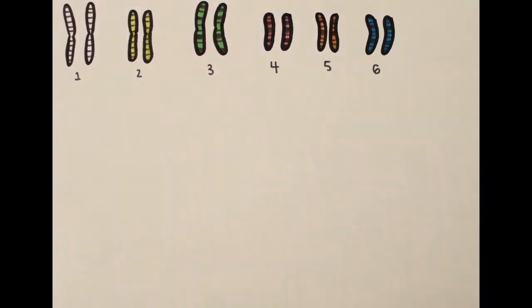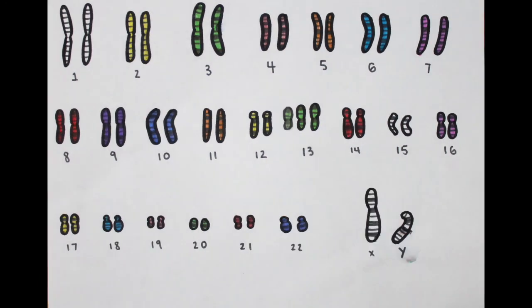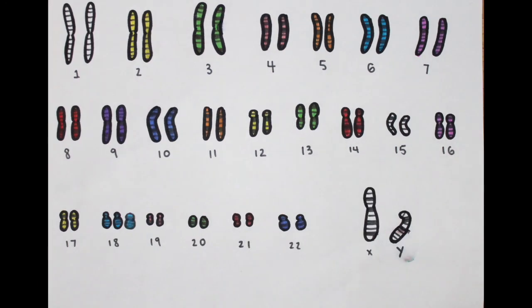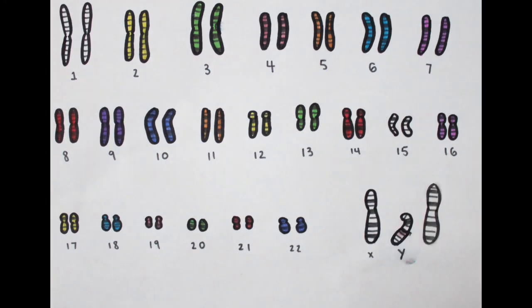Amniocentesis can screen for karyotype abnormalities, such as trisomy 13, trisomy 18, trisomy 21, Turner syndrome, or Klinefelter syndrome.